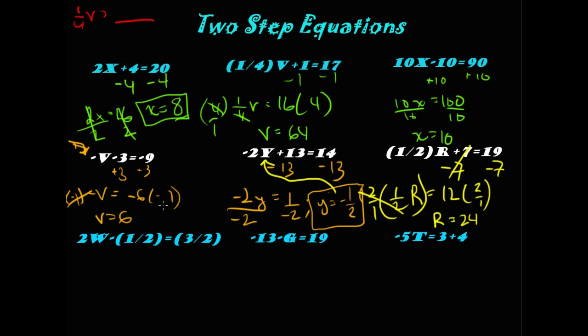Alright, bottom row. 2W equals minus 1/2 plus 3/2. Well, we add 1/2 to each side, just because they're fractions doesn't make any difference. You treat it the same exact way. 3/2 plus 1/2 is 4/2. 4/2 is 2. So, we get 2W equals 2, and we divide by 2 on each side, and we get W equals 1.